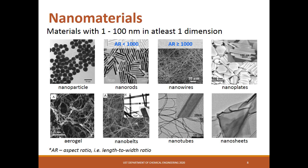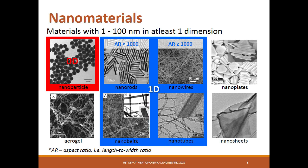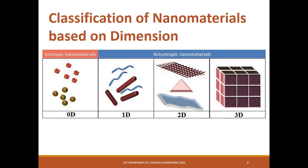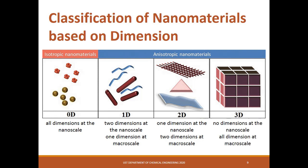These nanomaterials can be classified according to dimension, where nanoparticles are considered 0D; nanorods, nanowires, nanobelts, and nanotubes are considered 1D; nanoplates and nanosheets are considered 2D; while aerogel is considered 3D. 0D nanomaterials have all dimensions at nanometer scale, up to one hundred nanometers. 1D nanomaterials have two dimensions at the nanoscale and one dimension at the macroscale. 2D have one dimension at the nanoscale and two dimensions at macroscale. While 3D have no dimension at nanoscale, however its structure is composed of particles with nanoscale features like that of the aerogel.